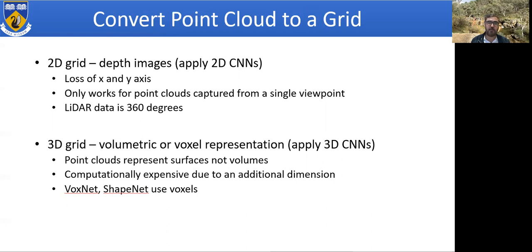For example, a 2D grid in depth images — this was the first attempt people made with 3D data to learn features from point clouds. However, in this case we lose the XY axes and it only works for point clouds captured from a single viewpoint; it does not work for 360-degree point clouds commonly captured by LiDARs. The other option is to convert point clouds into a three-dimensional grid — volumetric or voxel representation — which would work with 3D CNNs. But point clouds represent surfaces, not volume, so using a 3D grid is inefficient; there will be many empty voxels. VoxNet and ShapeNet are architectures that use voxels for deep learning.